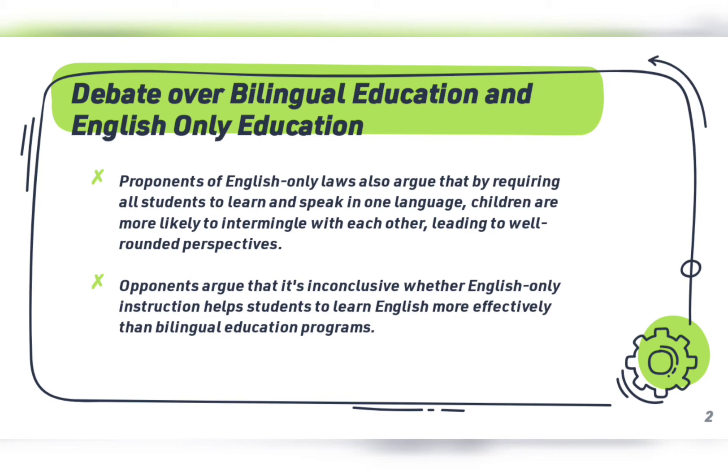Opponents argue that it's inconclusive whether English-only instruction helps students learn English more effectively than bilingual education programs. Supporters of bilingual programs believe the programs meet the critical need of immigrant students for basic English instruction, and that putting students who speak little to no English into classes with native speakers only leads to mutual frustrations. Some people also question whether English-only instruction may lead some immigrant students to feel a loss of heritage.